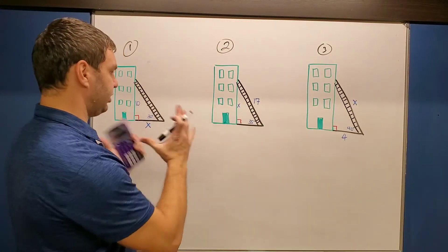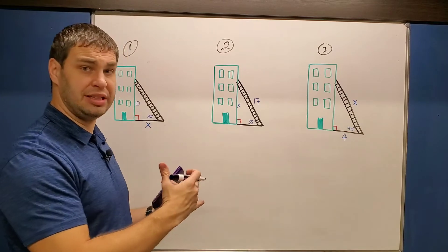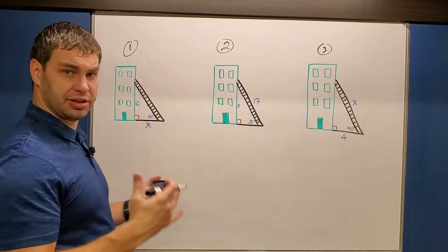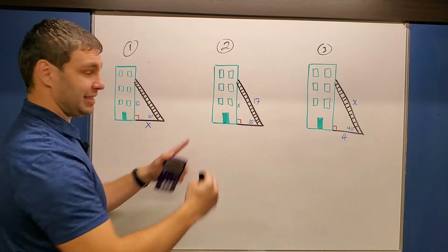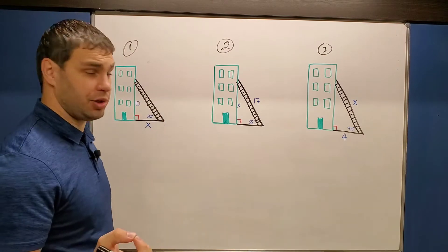All right, you just clicked on this video because you have a problem that says there's a ladder that leans against the wall or a building, and you need to find maybe a certain length of either the ladder or the ground, or maybe the distance the ladder leans against the wall. How far up the wall does the ladder lean? Your problem says something probably like that.